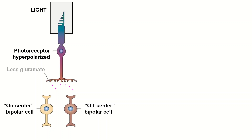Both on and off center bipolar cells have different responses to glutamate based on the glutamate receptors on each cell. The on center bipolar cells have metabotropic glutamate receptors while the off center bipolar cells have ionotropic glutamate receptors. For on center cells, these metabotropic glutamate receptors will hyperpolarize the cell in response to glutamate.